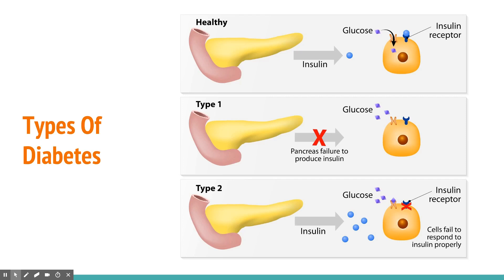Adults who develop diabetes usually develop type 2 diabetes. In type 2 diabetes there is a concept called insulin resistance. The glucose in the bloodstream can attach to cells, but insulin is not able to attach to the insulin receptor. As a result, glucose cannot enter the cell to provide energy. In simple terms, the cells fail to respond to insulin properly. Treatments aim at reducing insulin resistance and improving insulin-receptor binding to allow glucose into the cells.